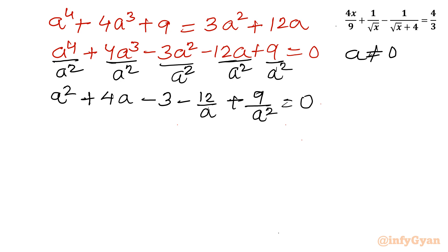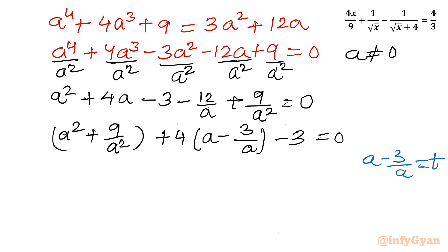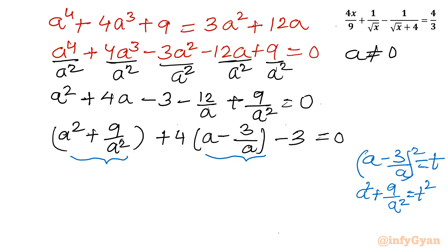We collect the first and last terms together, and the second and second-last terms together, taking 4 as common from those. Then we apply the substitution t equal to a minus 3 over a. Since (a minus 3/a) squared equals a squared plus 9 over a squared minus 6, we write a squared plus 9 over a squared as t squared plus 6. The equation becomes t squared plus 6 plus 4t minus 3 equal to 0.